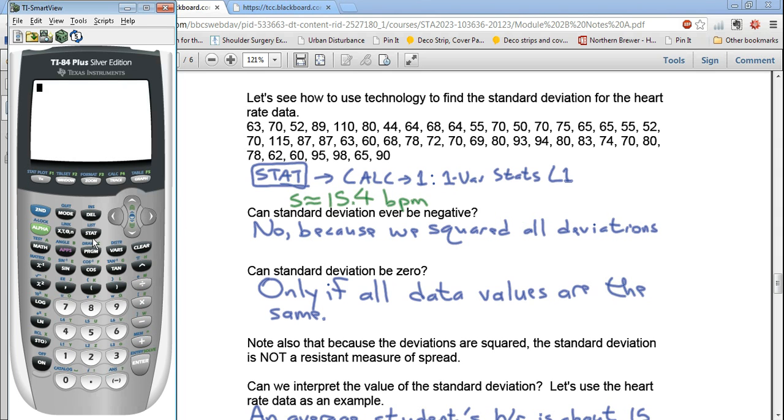So we're going to press the stat key, and then we're going to go to the Calculate heading, which is right there, the second one over, so I press the right arrow. And then one var stats is choice one. Now notice it says L1. That's actually the default setting. It will automatically look in L1, but it's not a bad habit to get into to tell it which list, tell the calculator which list, because you might forget if you don't get in the habit. So I usually will tell it L1, even though the calculator will automatically choose L1 if you don't tell it otherwise. And then you press Enter.